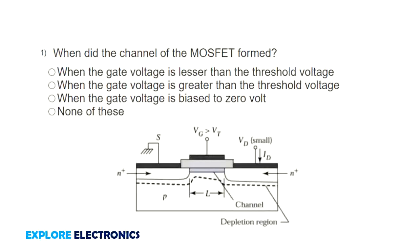Hello everyone, welcome to this short quiz on CMOS VLSI design. First question: when is the channel of the MOSFET formed? When is the channel in between source and drain going to be formed?